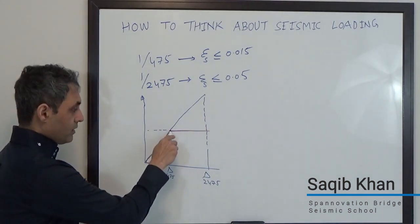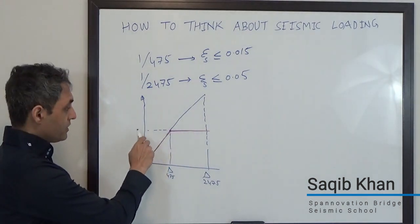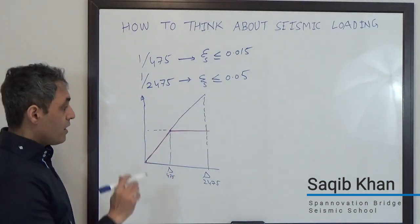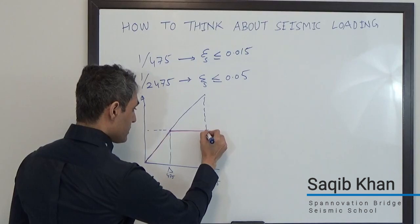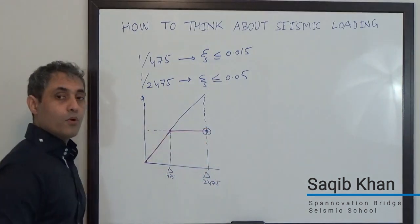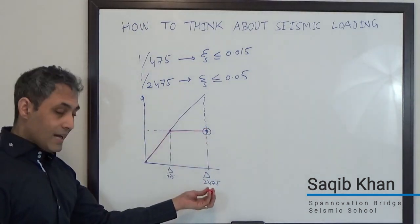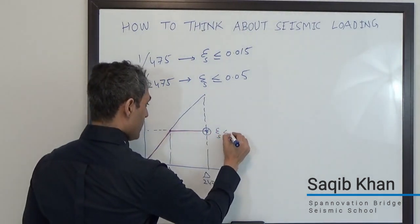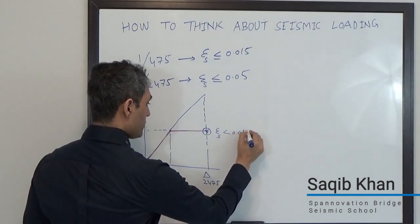Now we've done our initial design and our system is going to go along this path. So the force is capped. I cannot develop more force in my system for a 2475-year return period event. However, I have to make sure that my system can reach that point. And when it reaches that point of that displacement level, that the strain in my rebar is less than or equal to 0.05.